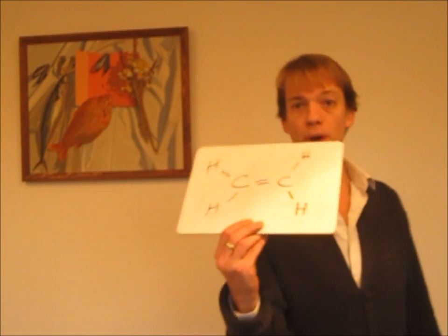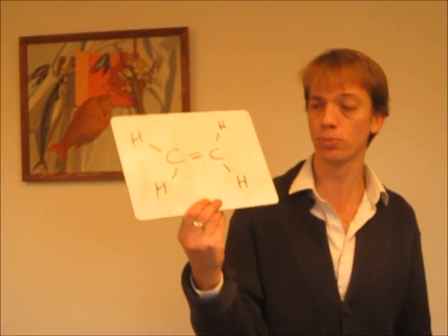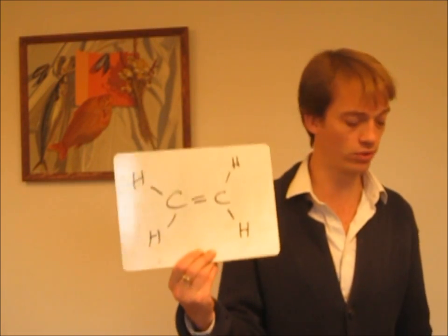This is all about polymerization, which is used to make plastics. We start off with different building blocks which we call monomers. The building block we're going to use in this example is ethene. So there's a monomer, ethene — you can see it's a small molecule with a double bond.